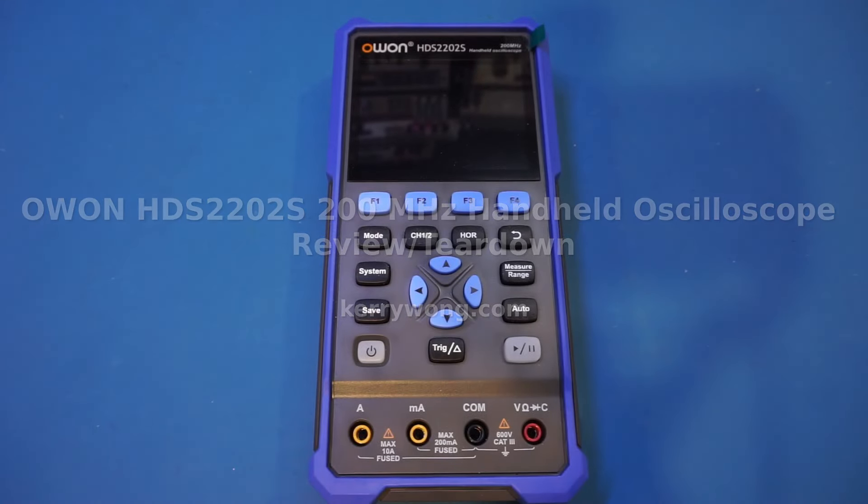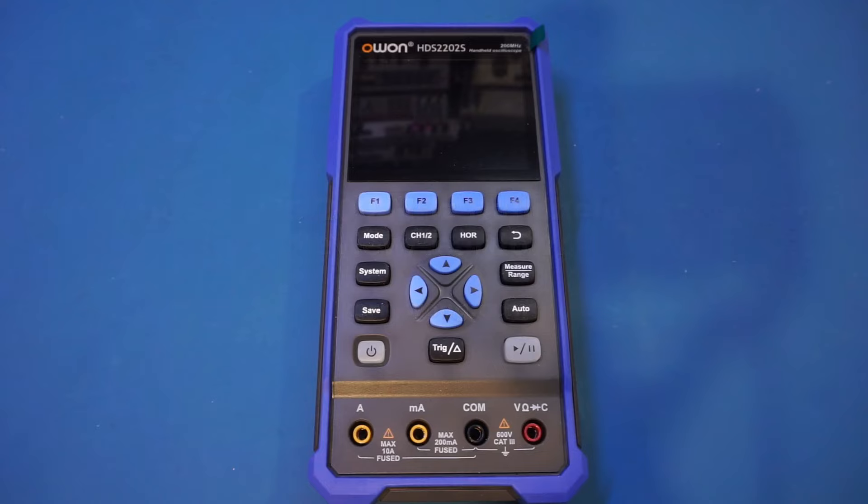Hi. On the workbench today, I finally get my hands on an OWON HDS2202S scope meter. This is the latest and greatest in OWON's HDS200 series lineup. It has a dual-channel 200 MHz oscilloscope built-in along with a 20,000 counts digital multimeter and a single-channel arbitrary waveform generator that is capable of outputting a sine wave up to 25 MHz.